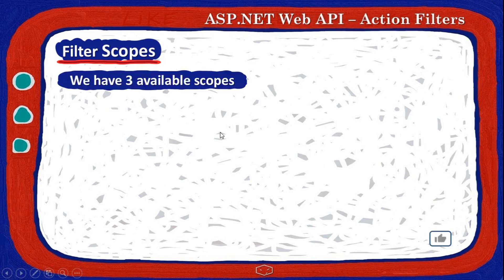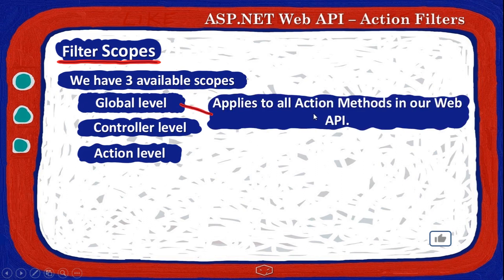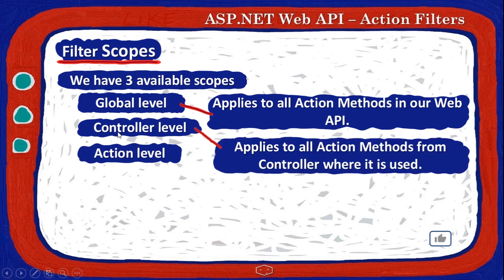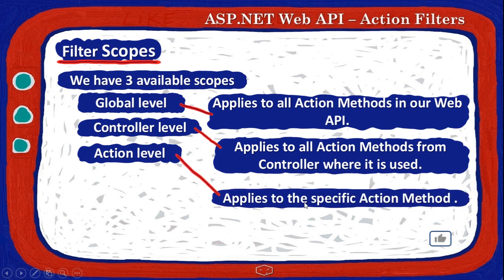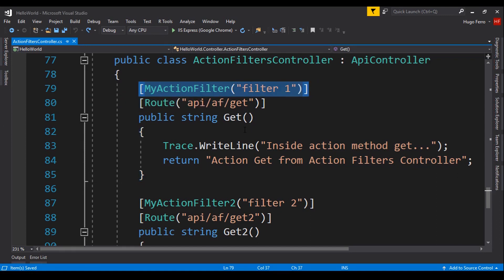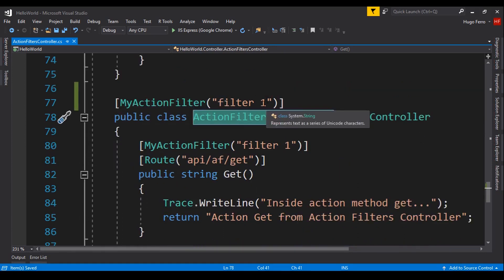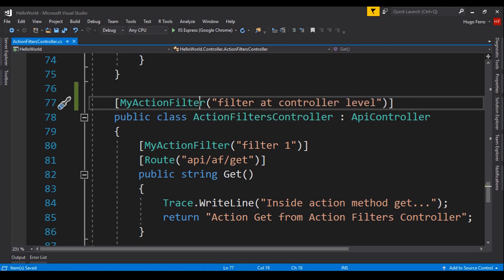About filter scopes — we have 3 levels. The first is the global level, the second is the controller level, and the third is the action level, which is what we just saw in the examples. The global level means the filter will be applied to all action methods of our Web API. The controller level means all action methods from that controller will have that filter. At action level it applies to a specific action method. We can copy the filter attribute and paste it before our controller for controller-level scope.